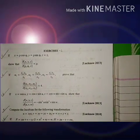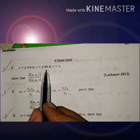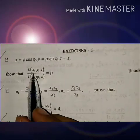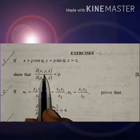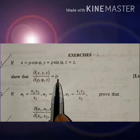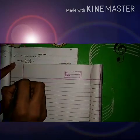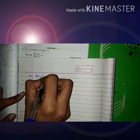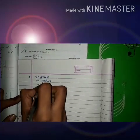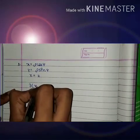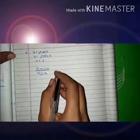Hello friends, in this video we will discuss an exercise on the topic of Jacobians. Question number one: if x = ρcosψ, y = ρsinψ, z = z, show that ∂(x,y,z)/∂(ρ,ψ,z) = ρ. We need to prove that ∂(x,y,z)/∂(ρ,ψ,z) is equal to ρ.